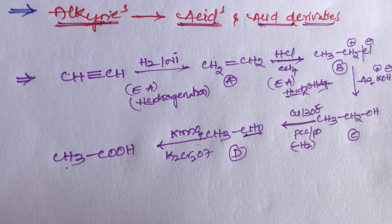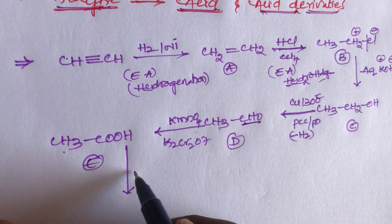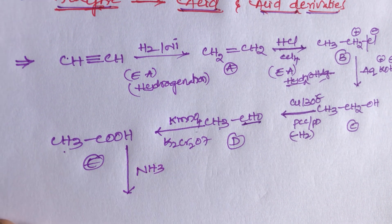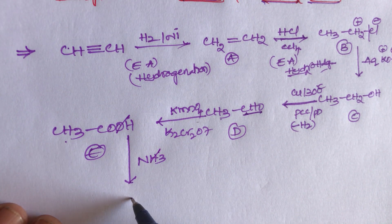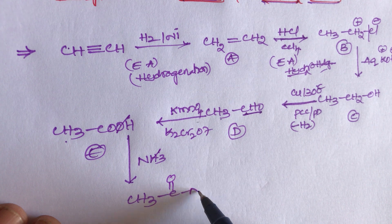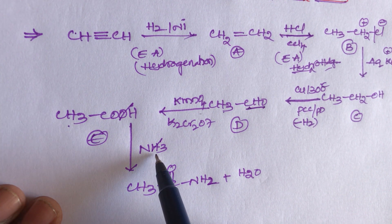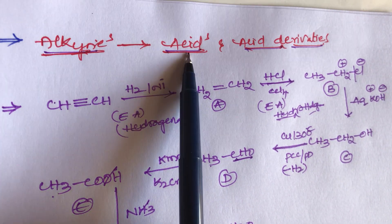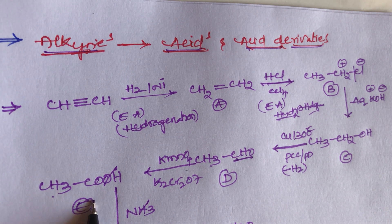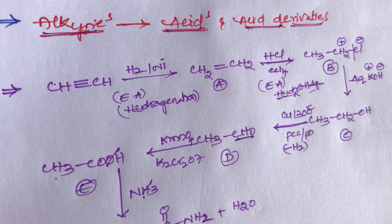So we get acid — this is compound E. This acid, acetic acid, reacts with ammonia. In a simple reaction, the OH group from carboxylic acid and H⁺ from NH₃ are eliminated, and we get the product CH₃CONH₂ — acid amide — plus water. This is called acid amide or acetamide. This is an acid derivative.